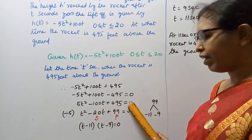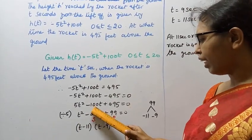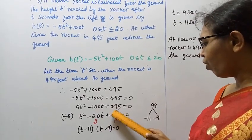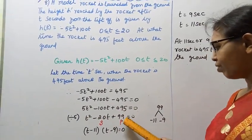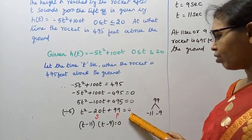Dividing everything by 5: t² - 20t + 99 = 0. So we have t² - 20t + 99 = 0.